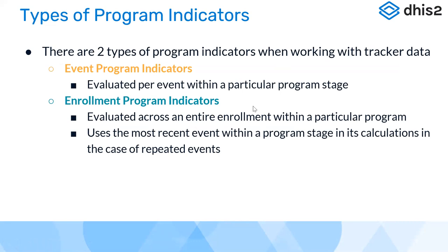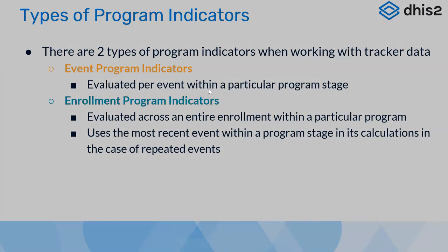There are two types of program indicators when working with tracker data: event program indicators and enrollment program indicators. Event program indicators are evaluated per event within a particular program stage — they calculate each event within that program stage. Enrollment indicators evaluate across an entire enrollment within a particular program. When using enrollment program indicators, it uses the most recent event within a program stage in its calculations.